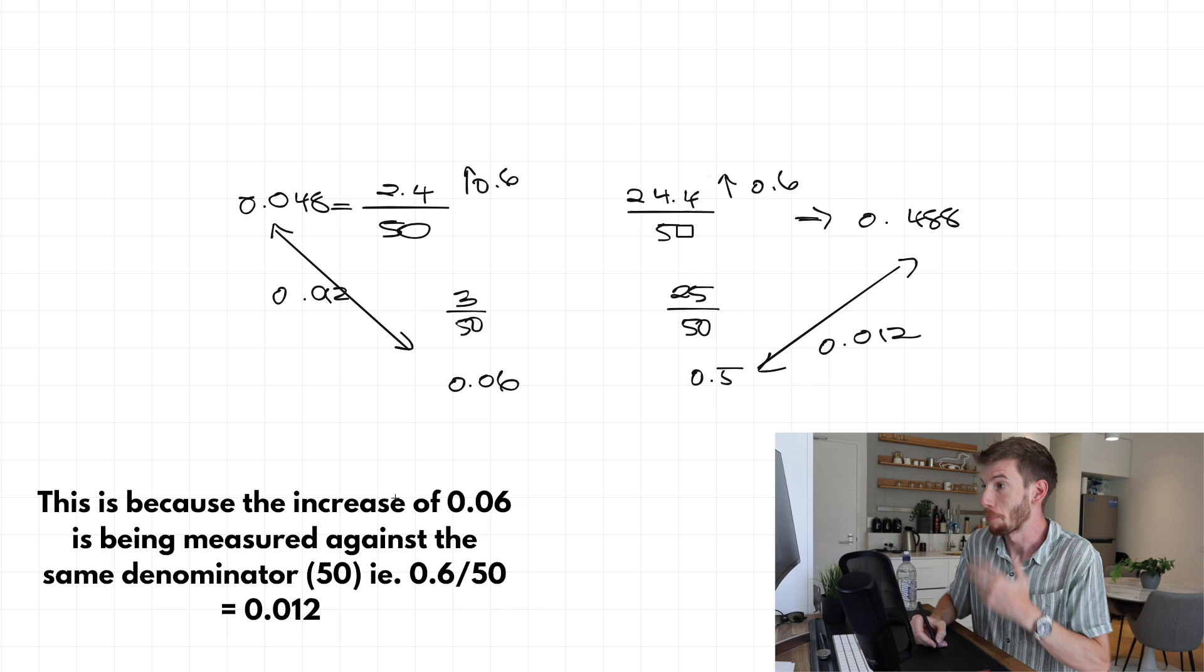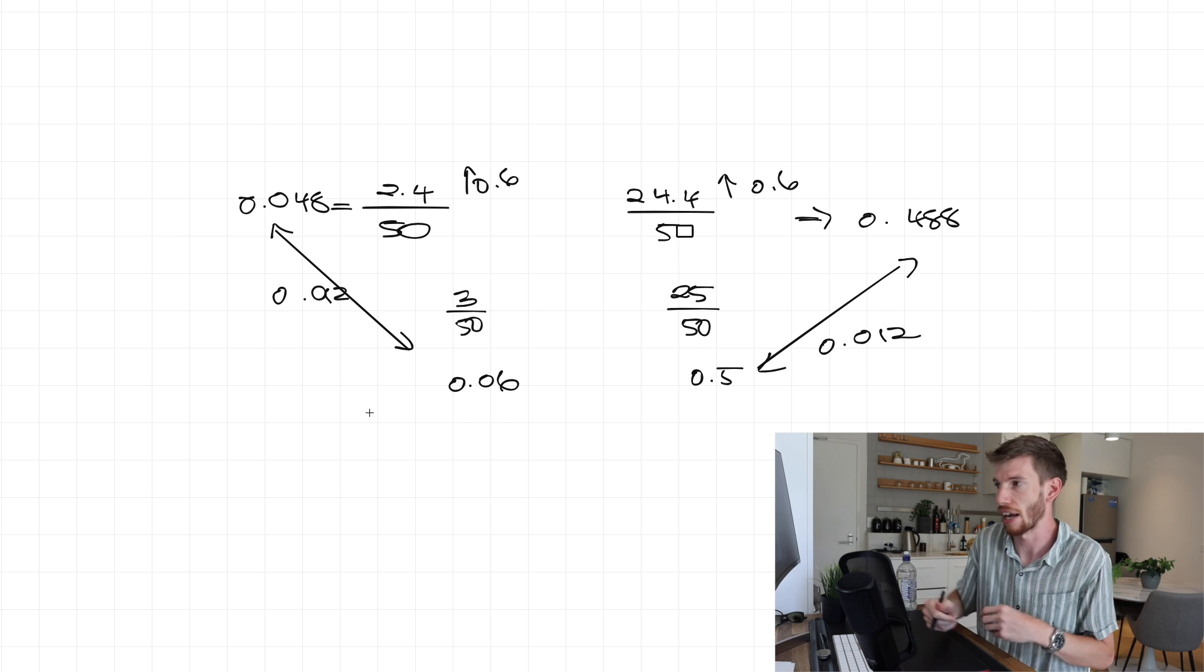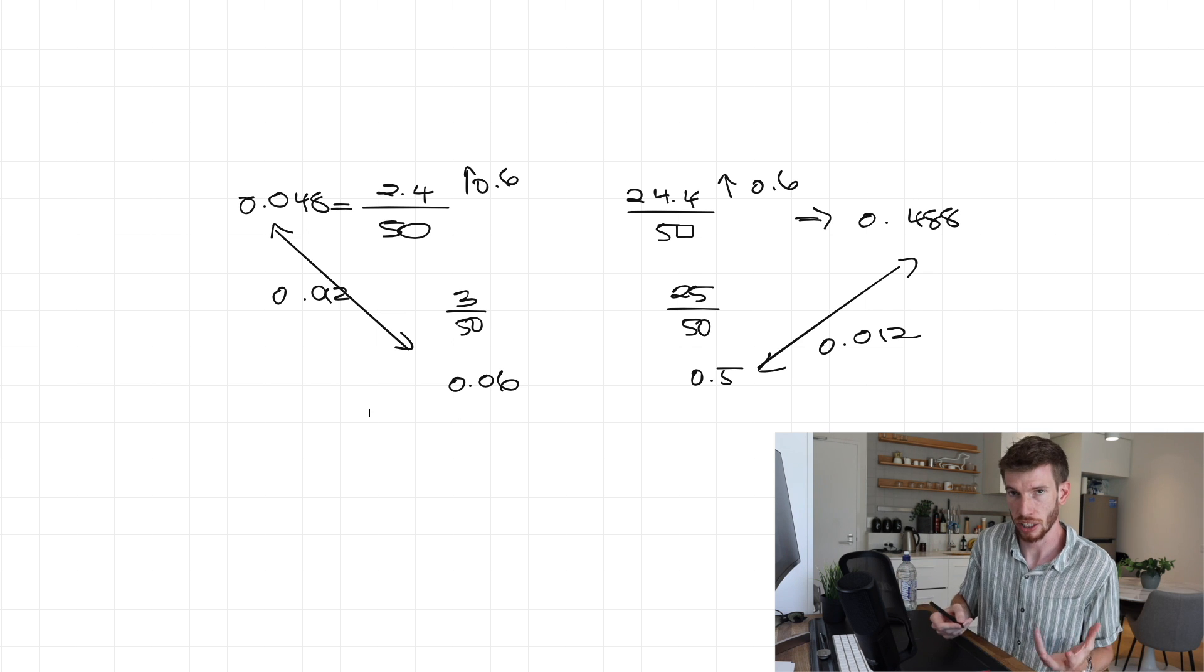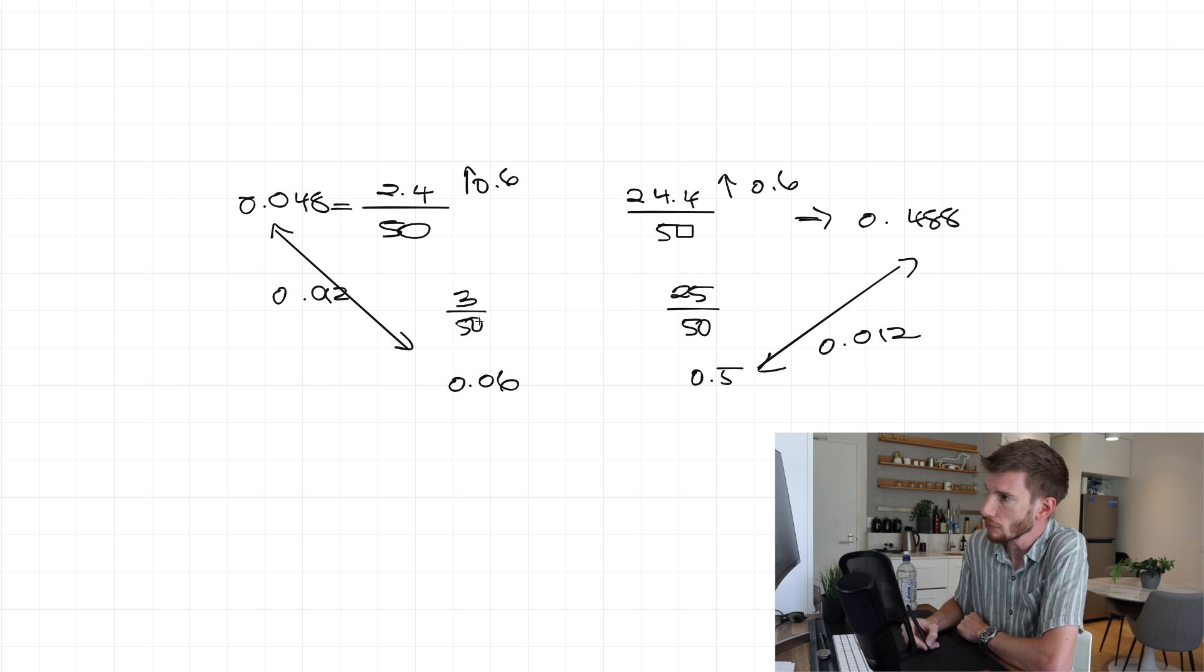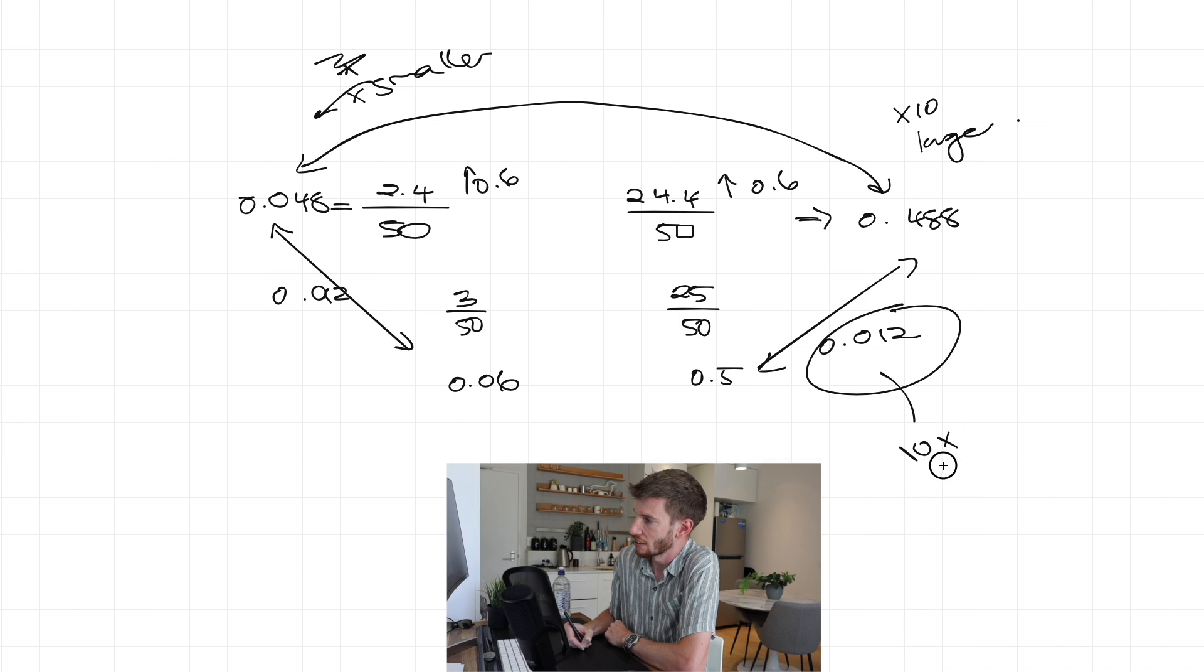So the absolute error margin is no different. But what we've got to factor in is the relative error margin compared to the actual value that we're considering. So we look at a relative error. And I like to think of it as a percentage instead. This is the thing that you actually want to be paying more attention to when you're making estimations, rather than the absolute value of the change that you're making. So we can see here that relatively speaking, this one over here is 10 times smaller. This one over here is 10 times larger. So what that means is this here is 10 times less significant than an error margin of 0.012 over here. This is 10 times more significant than the other.